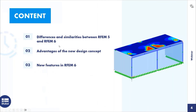First, I'll say something about the content. I explain differences and similarities between RFM 5 and RFM 6, and also the advantages of the new design concept. I show you new features in RFM 6. I start with a new model — a simple model with steel frames and a concrete surface — and explain step by step what is similar and what is new. This webinar is also valid for RSTAP.